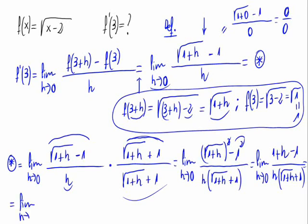This is the limit when h approaches 0. Please don't calculate the denominator as it is going to get simplified. So h divided by h times the square root of 1 plus h plus 1.